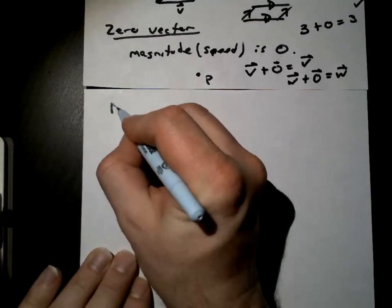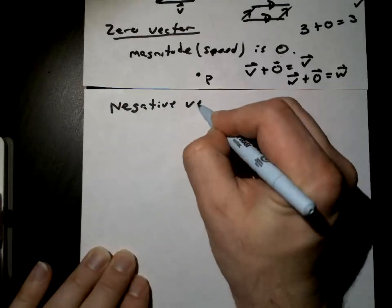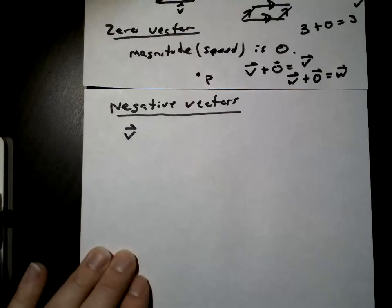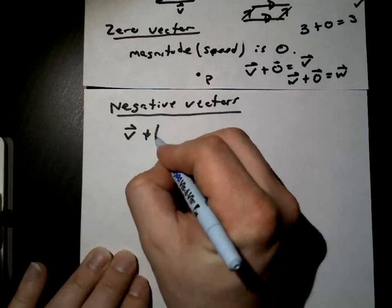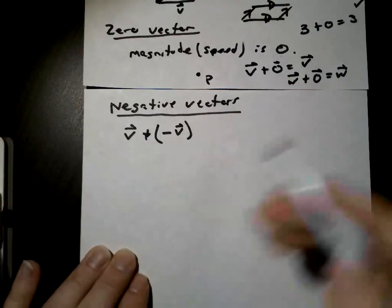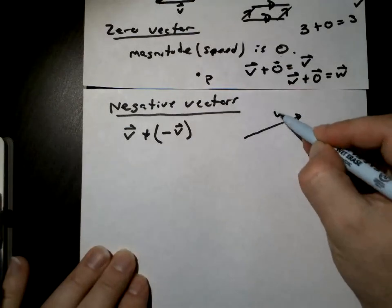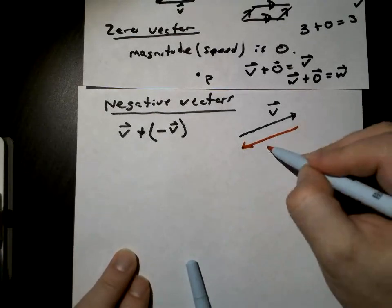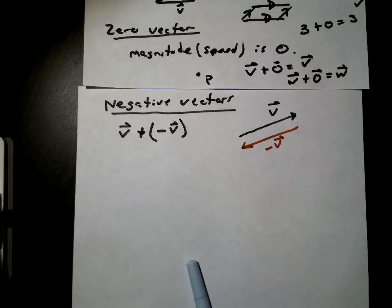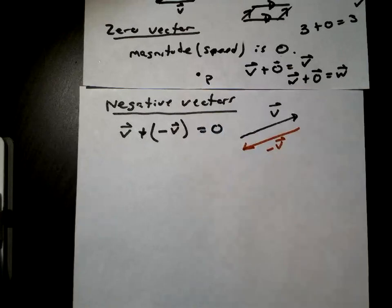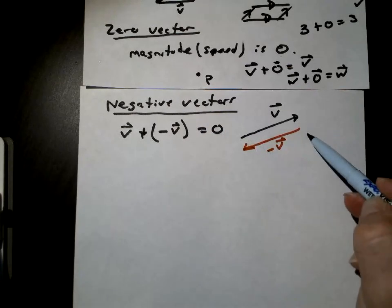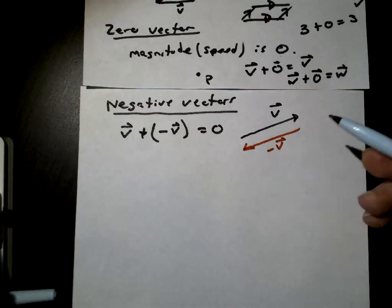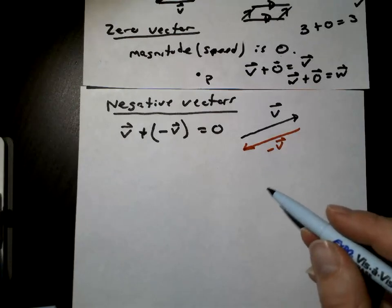What about negative vectors? If I add vector V plus the opposite of that same vector — going this way on V and then going backwards with negative V — you're going to have zero. You're going this way and then back that way, so you end up with a zero vector.